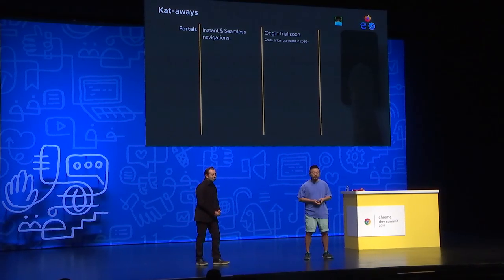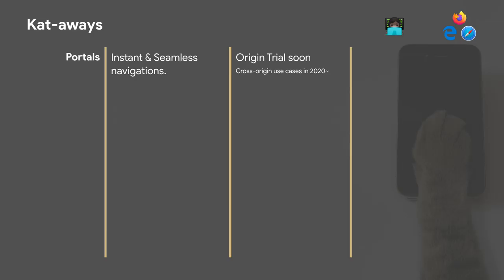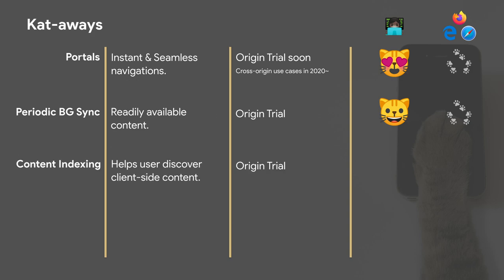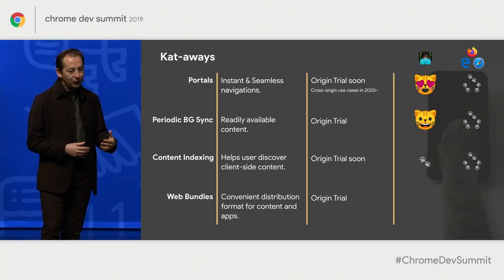To close, we've talked about four APIs today. The first one, portal, is designed to enable instant and seamless navigation. Periodic background sync is designed to help get content ahead of time on the device so you don't have to worry about connection. Content indexing is about surfacing the content available on the device, and it's going to be available in origin trial soon. And last but not least, web bundles — a convenient format to enable discovery and distribution.